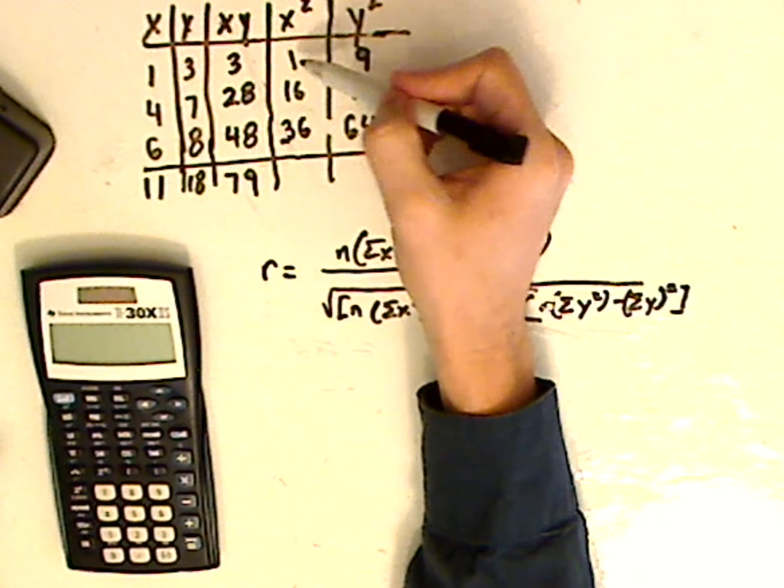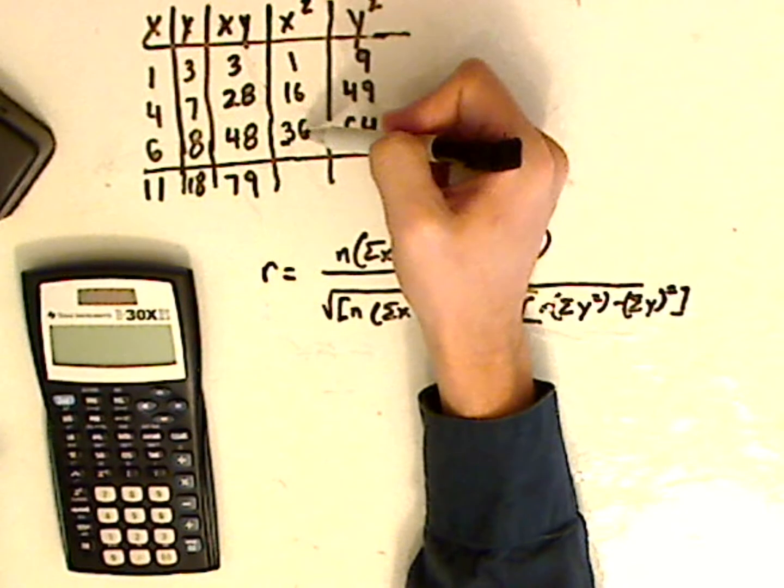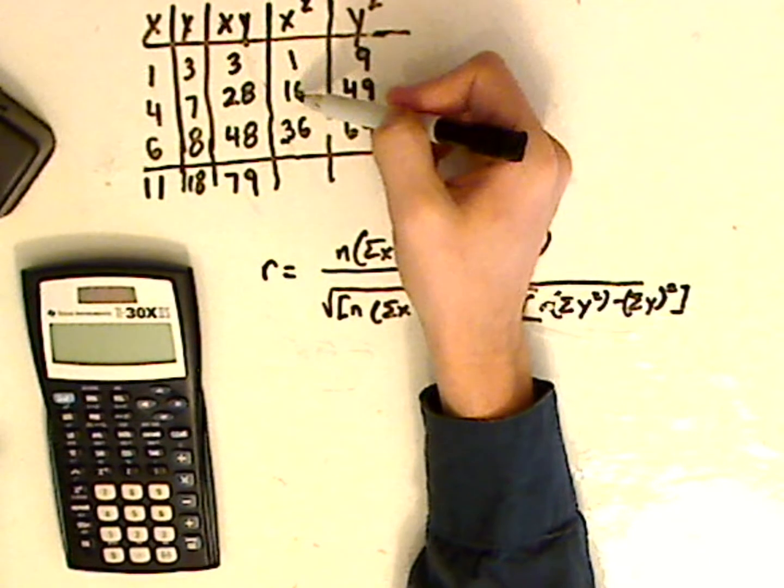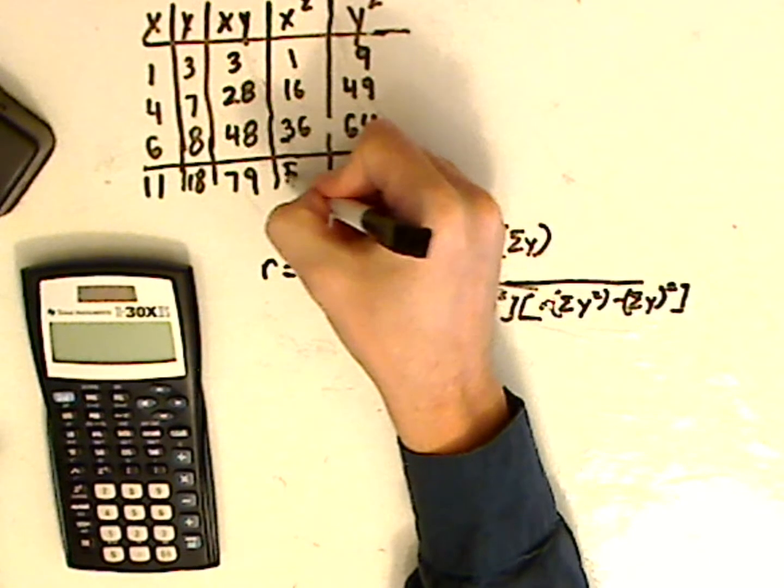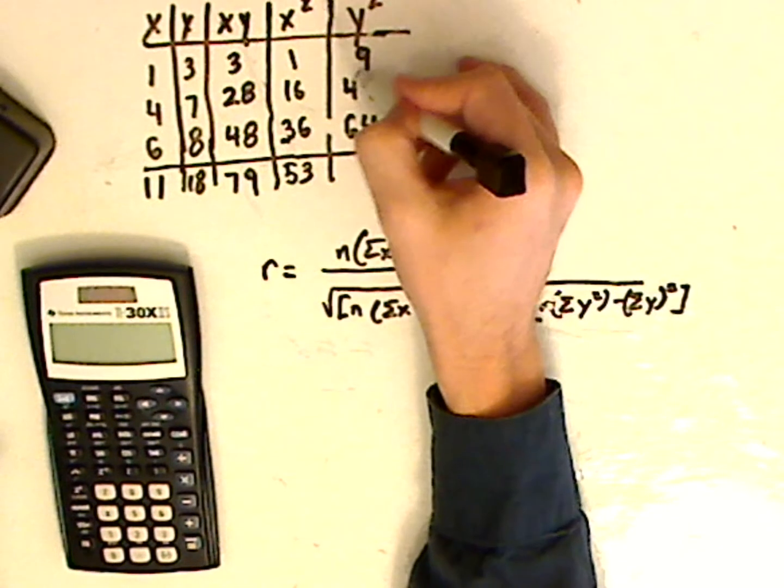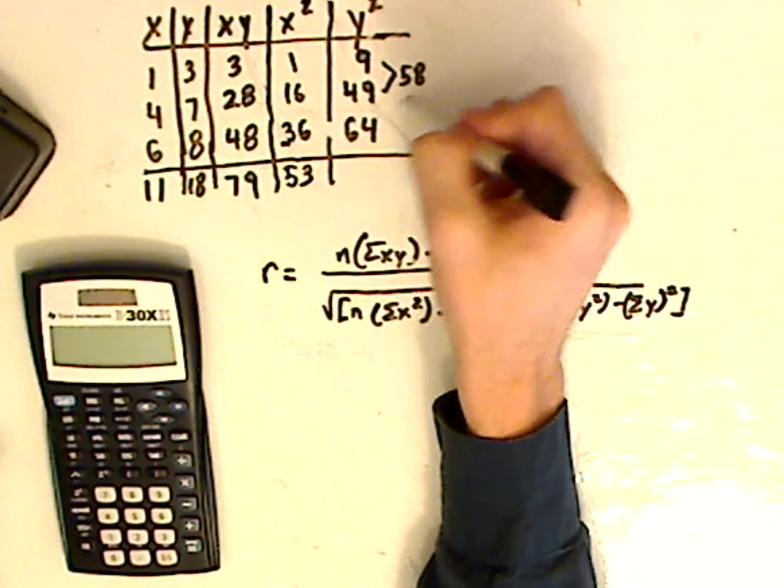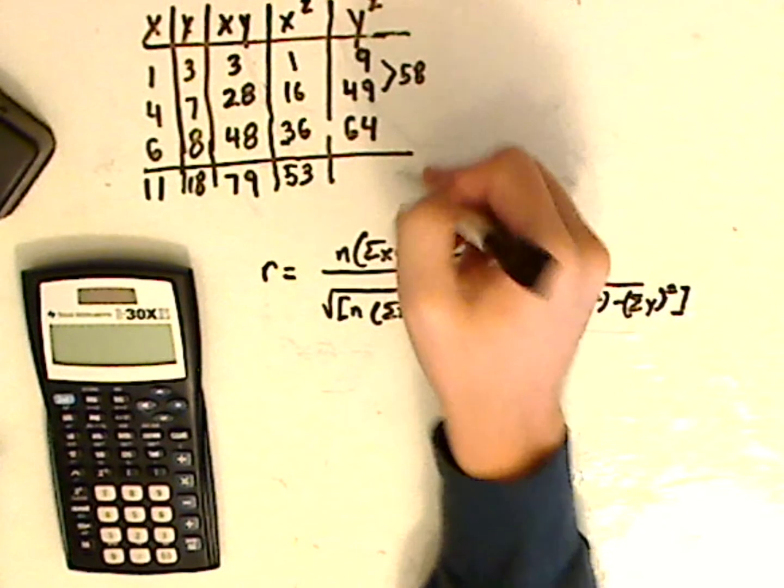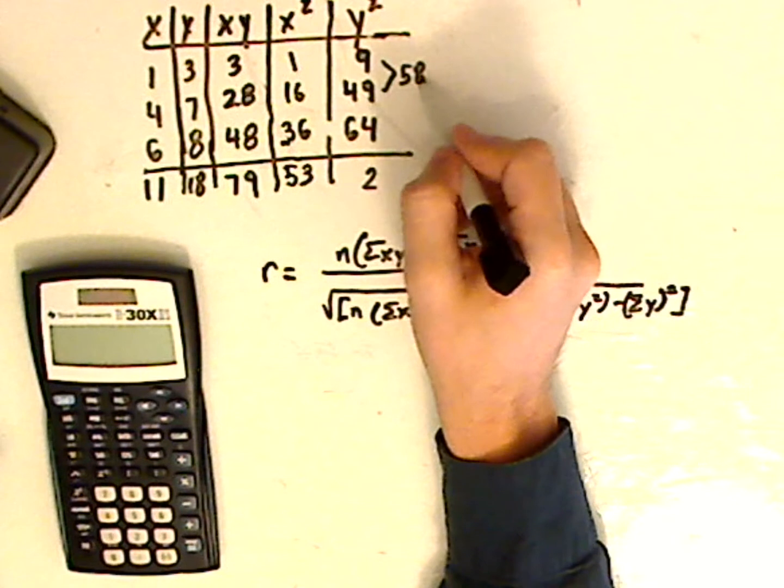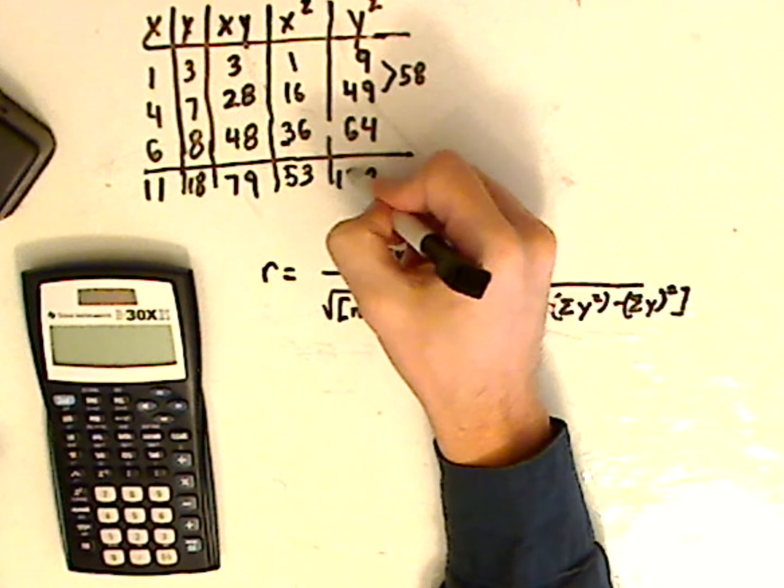Alright, then I have my x squares that I need to add up. So I have 36 plus 16, that's 52 and then 52 plus 1 is 53. Now I'm adding these, 9 times 48 is 58 and then 58 plus 64, carry the 1, you know that's 12 right? 4 plus 8 is 12, 6 plus 5 plus 1 is 12, so that's 122.